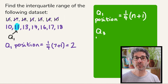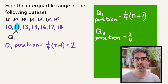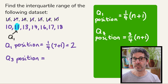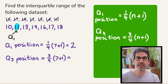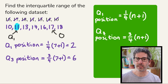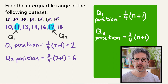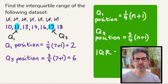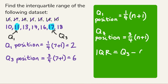The upper quartile is very similar. We do three quarters of (n + 1) to find its position. In this example that's three quarters of (7 + 1) — three quarters of 8 — which is 6. That tells us the upper quartile is the sixth value along, which is 17. To find the interquartile range, all you have to do is subtract the lower quartile from the upper quartile: 17 minus 11. So the interquartile range is 6.